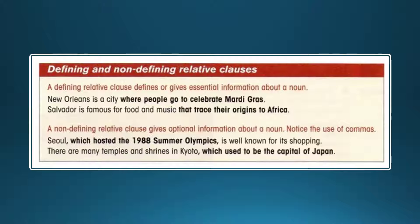A non-defining relative clause gives optional information about a noun. Notice the use of commas. Seoul, which hosted the 1988 Summer Olympics, is well known for its shopping. There are many temples and shrines in Kyoto, which used to be the capital of Japan.